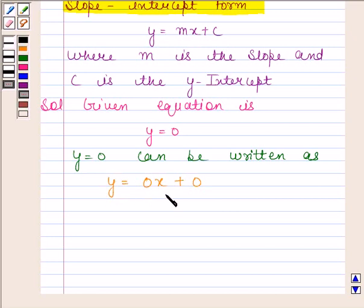So this is the slope-intercept form of the given equation. Now we will find its slope and y-intercept. Let's name this equation as 1.